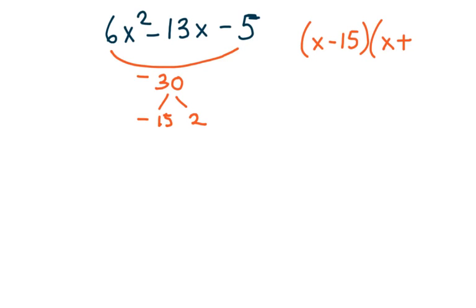We get x minus 15 times x plus 2. Now there's no number, or the number 6 right here. We can't divide this by either one of those numbers and get anything like a whole number out of it. So what can we do to 6? Can we break this up into two factors that we could use to finish this problem? And the answer is yes.